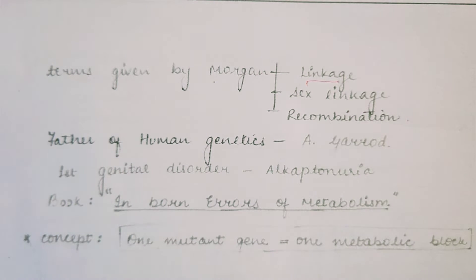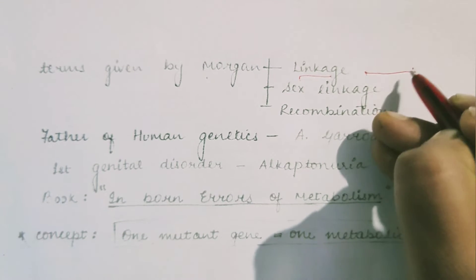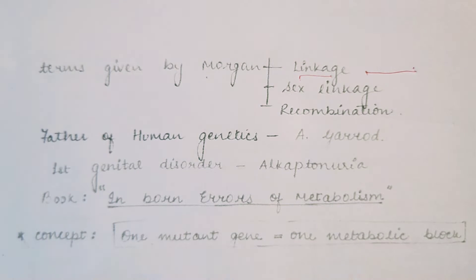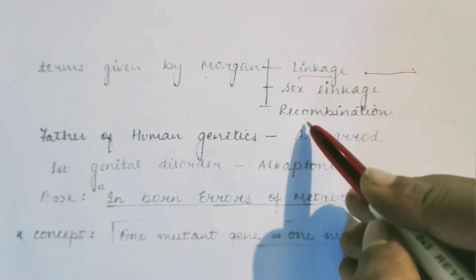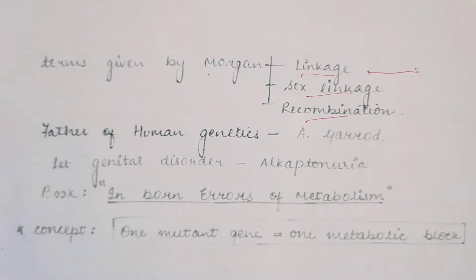Morgan gave the following terms: linkage — meaning linked genes transfer together from one generation to the next; sex linkage — meaning sex-related characteristics and sex-linked diseases that are transmitted; and recombination. So Mendel is the father of genetics, W. Bateson is the father of modern genetics, and T.H. Morgan is the father of experimental genetics.